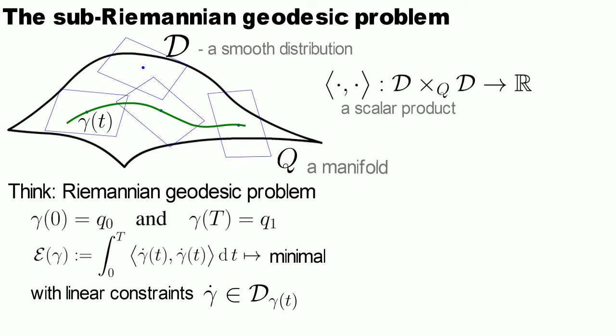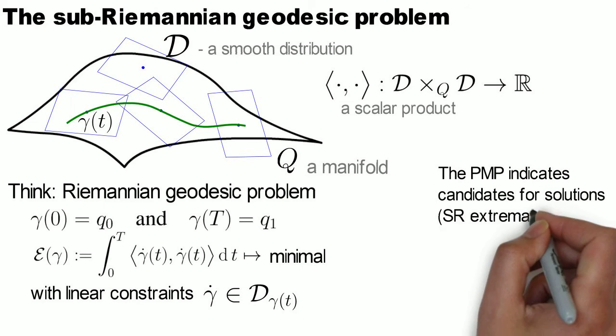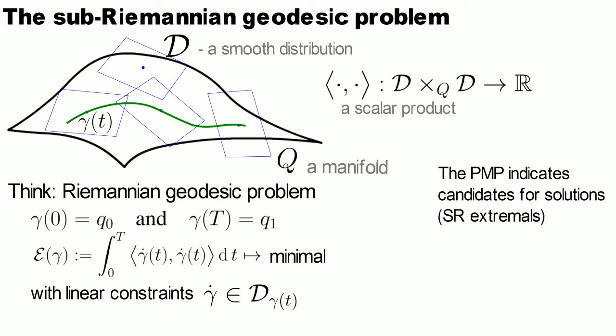Candidates for such minimizing curves are indicated by the Pontryagin maximum principle. We call them Subriemannian extremals. There are two classes of such curves called normal and abnormal ones respectively. Here we concentrate on the normal Subriemannian extremals.